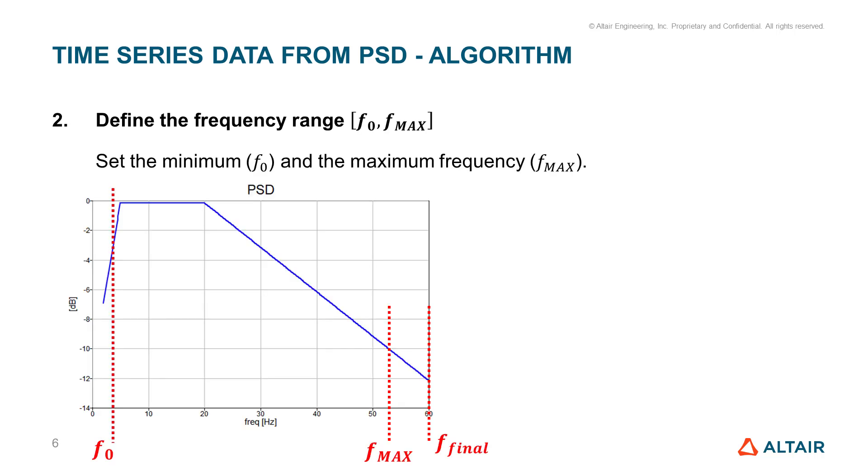The second step is to define the frequency range. Here we are tackling the most general case, which means that the starting and ending frequency of our range do not coincide with the starting and ending frequency of the power spectral density curve we are given.